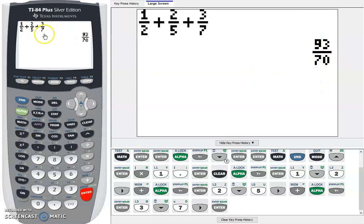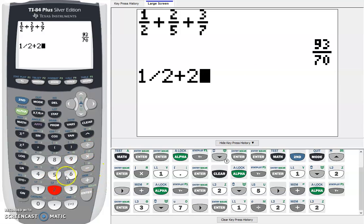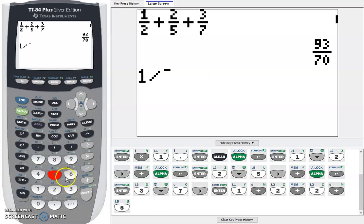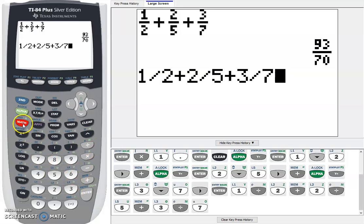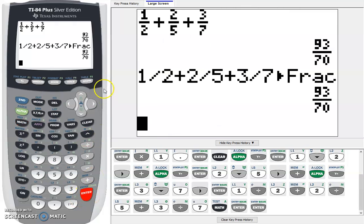This weighs a little bit longer than doing it the way where you just do 1 divided by 2, plus 2 divided by 5, plus 3 divided by 7. And then what we could do is just press math frac and it should give us a fraction answer. Both ways work. You can choose which way you want.